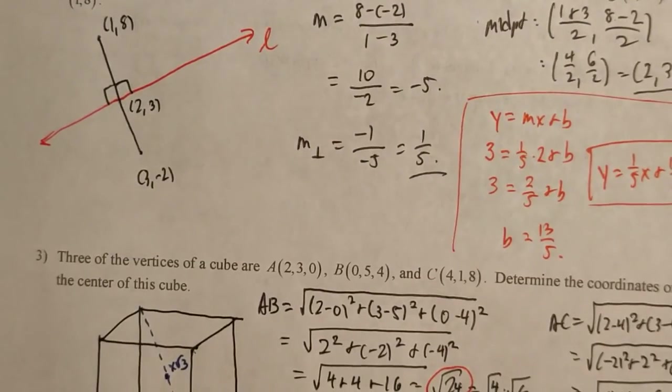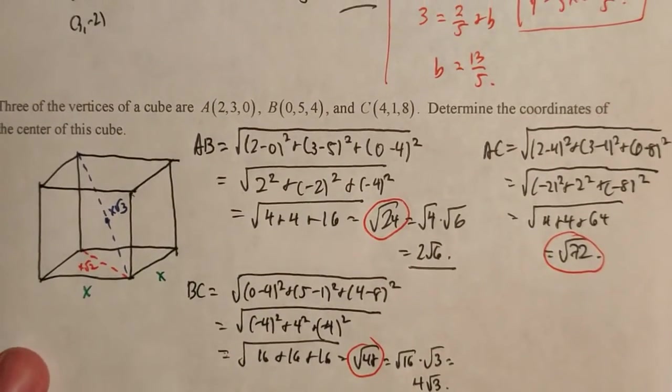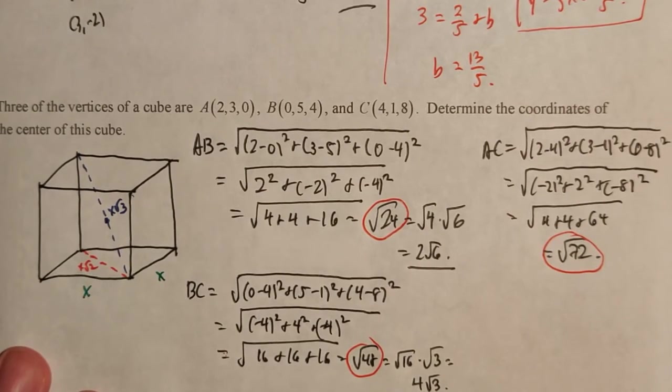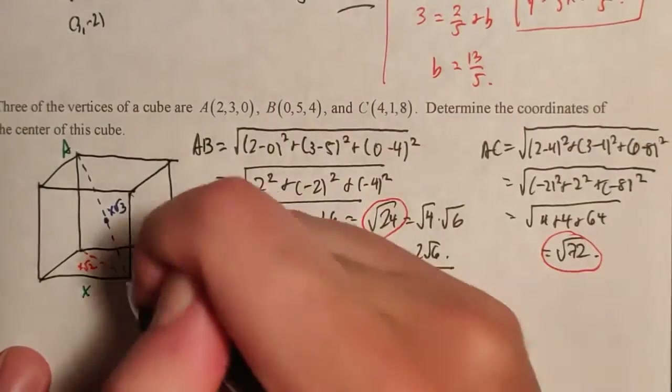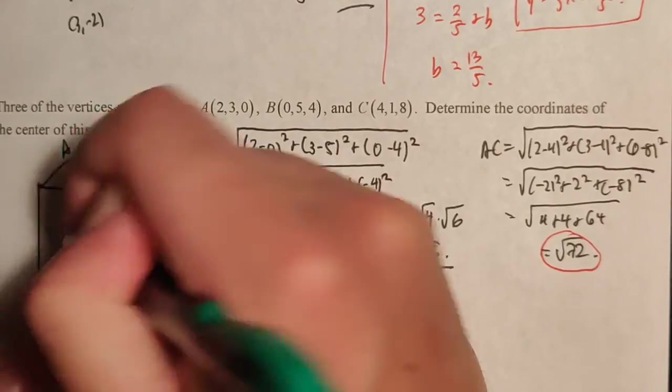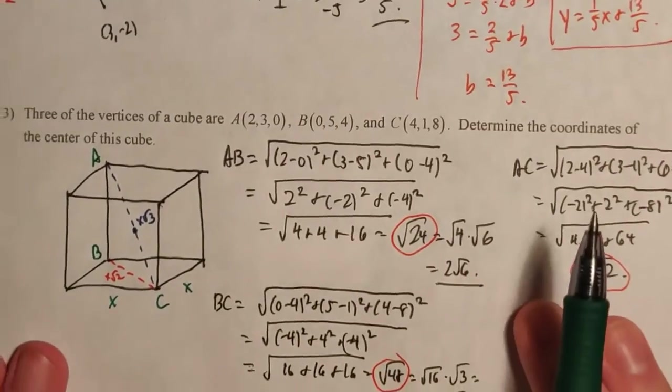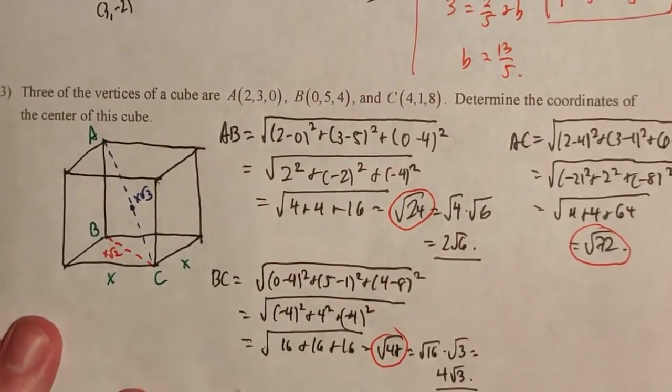So with that in mind, we actually can determine that these three points, A, B, and C, are in really good positions. AB must therefore be an edge. BC must be a face diagonal. And AC has to be a long diagonal. AC is what we want. So that means we can have something that looks like this. So we know that the configuration of points is going to be something like this.